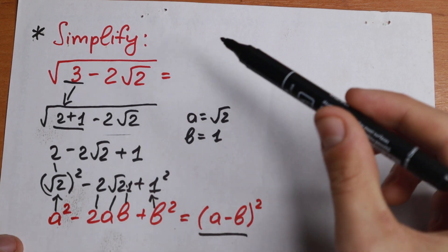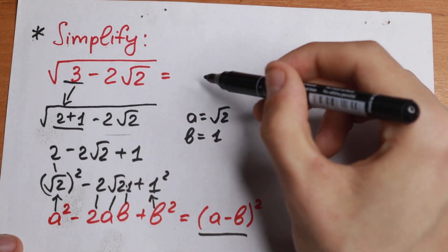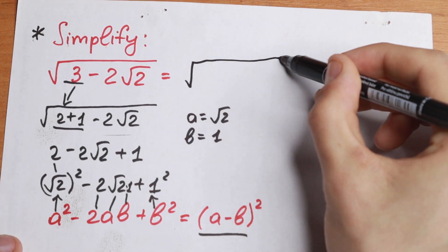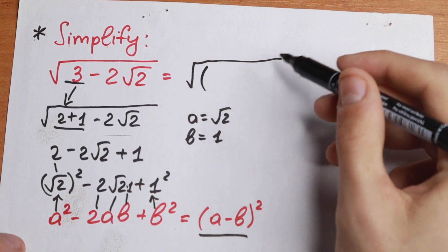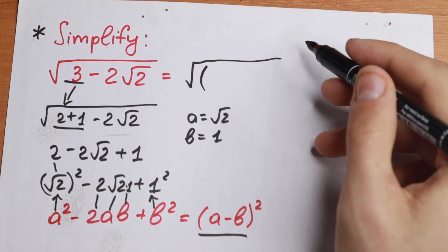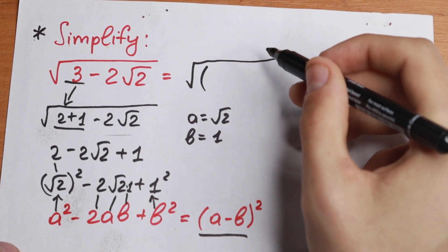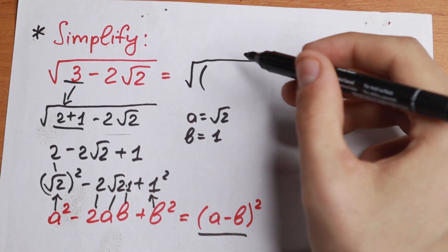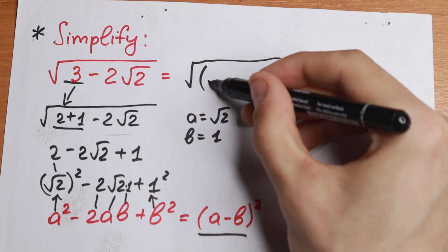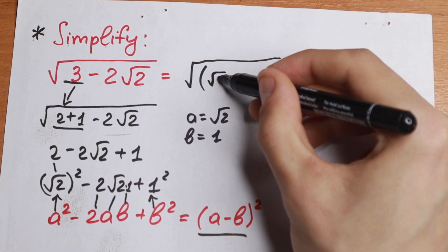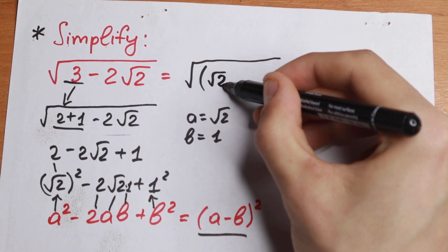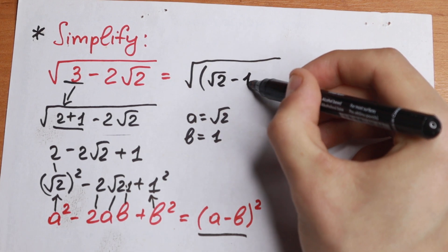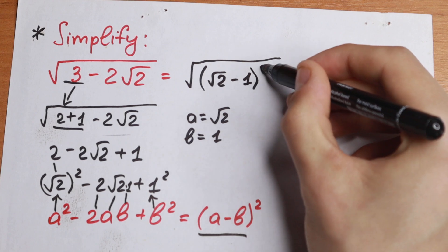Using the formula, the expression inside the outer square root can be written as (a minus b) squared, which is (square root of 2 minus 1) squared. So our full expression becomes the square root of (square root of 2 minus 1) squared.